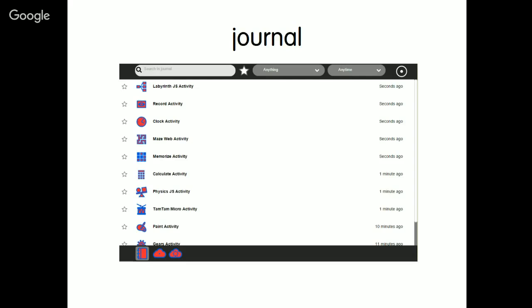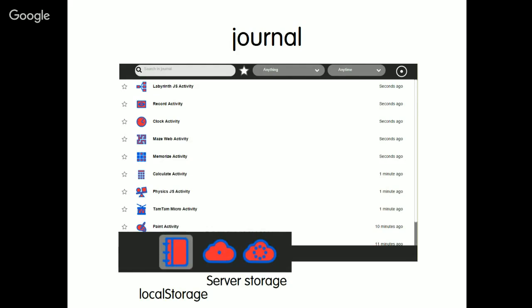There is an issue with that — the storage allowed for the browser is very small. So in Sugarizer you've got two modes. You've got the opportunity to store by default on local storage, but you've also got a way to store on a remote server. You can see this with a small cloud icon — in two ways: a private zone where you store your journal only for yourself, and a public storage where all other users that can access the server could share their journal together.